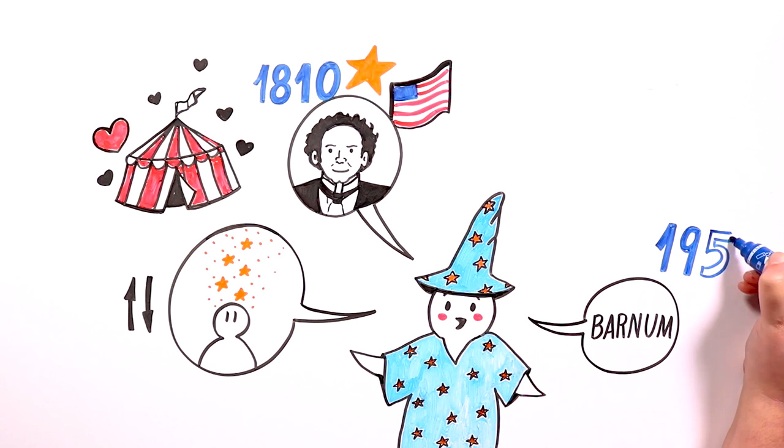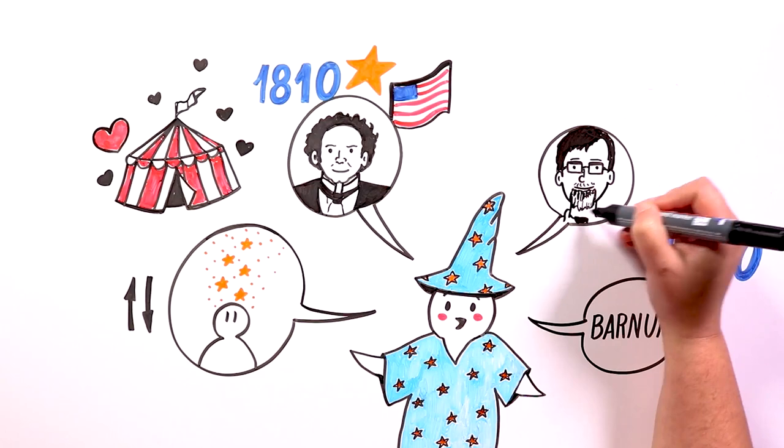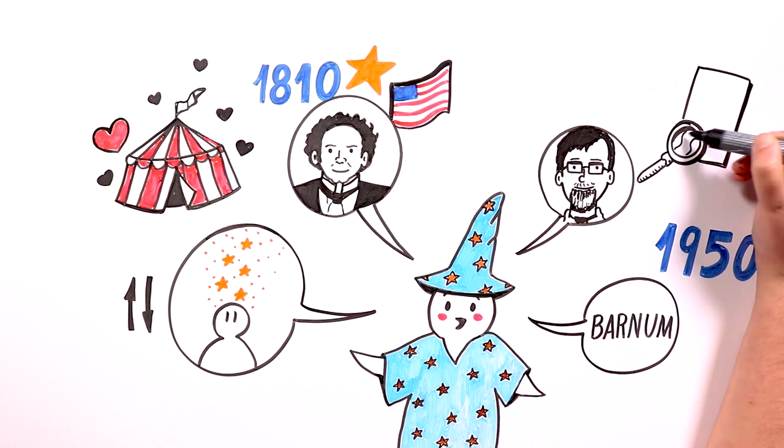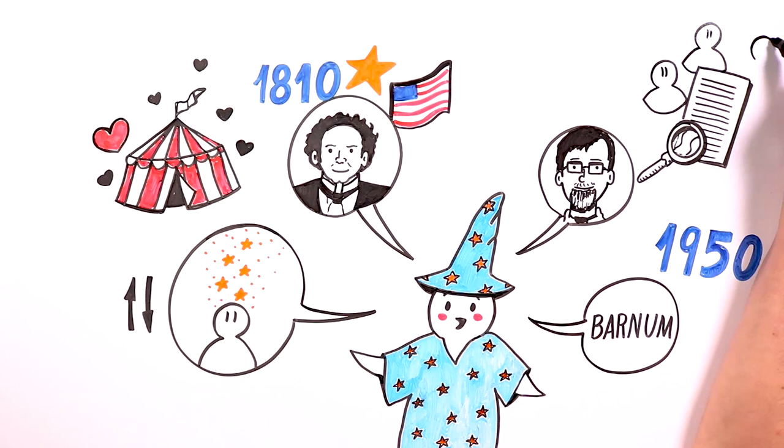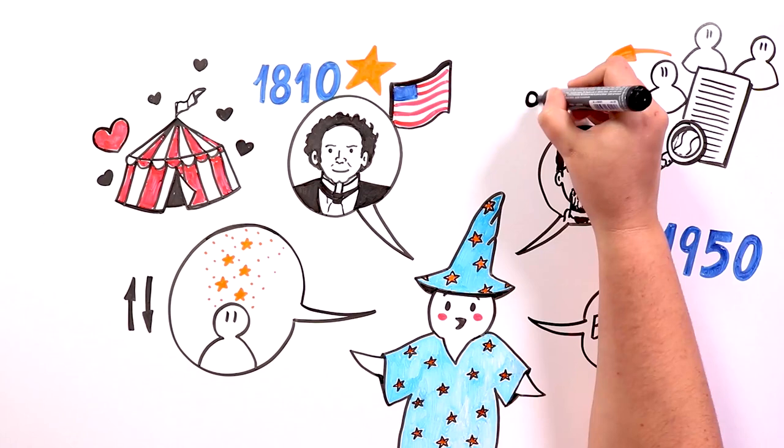Although he already knew how to do it, the Barnum effect was created in the 1950s by Paul Mill. He conducted several investigations in which he discovered that several expressions from psychiatric and psychological reports from a clinic could be associated with almost any patient. They were very generic phrases, and were often repeated.